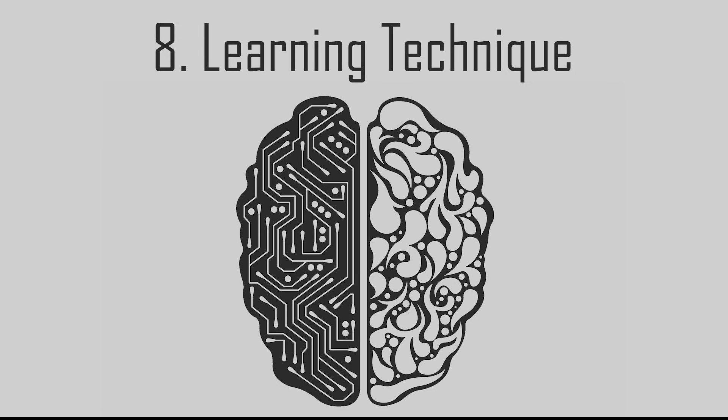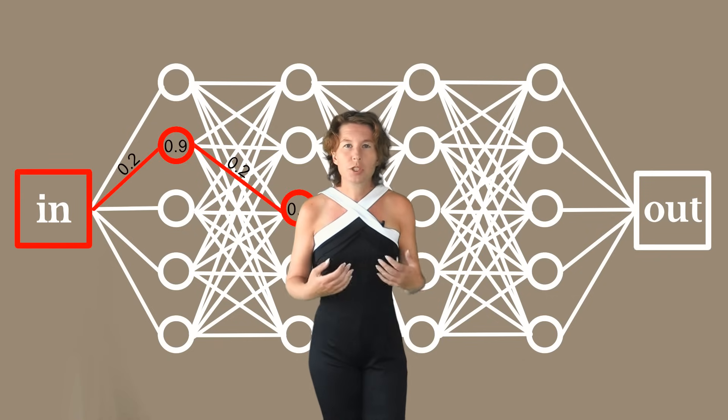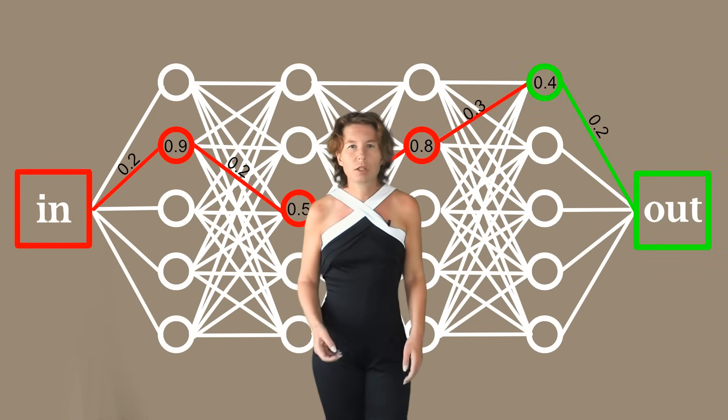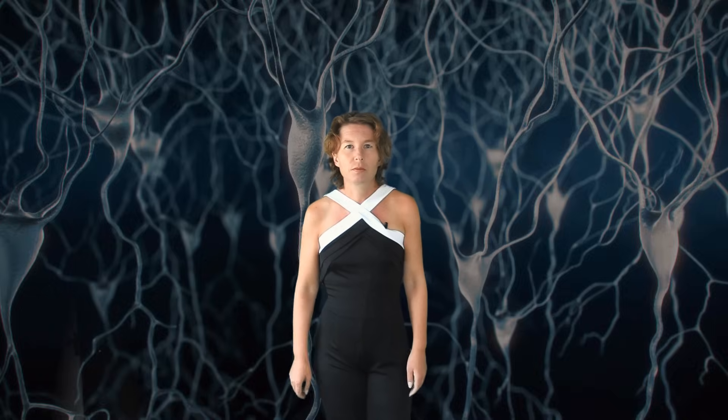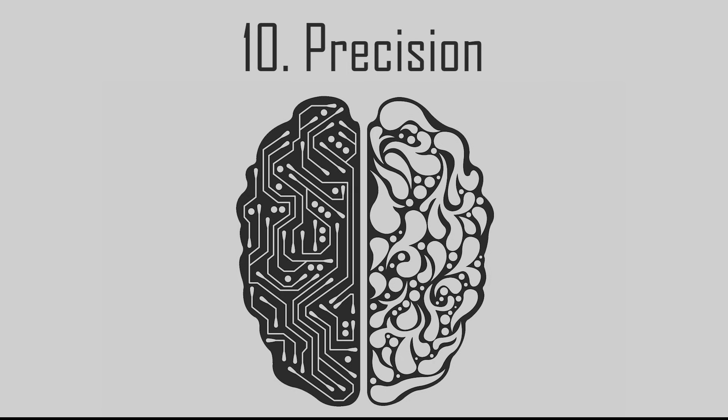Eighth, learning technique. Neural networks learn by producing output, and if this output is of low performance according to the loss function, the net responds by changing the weights of the neurons and their connections. No one knows in detail how humans learn, but that's not how it works. Ninth, structure. A neural net starts from scratch every time. The human brain has a lot of structure already wired into its connectivity and draws on models which have proved useful during evolution. Tenth, precision. The human brain is much more noisy and less precise than a neural net running on a computer. This means the brain basically cannot run the same learning mechanism as a neural net, and it's probably using an entirely different mechanism.